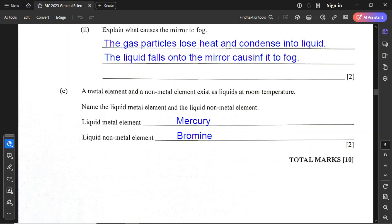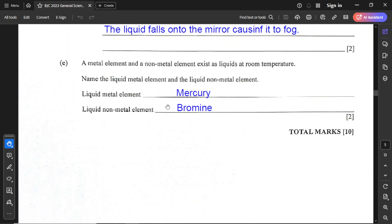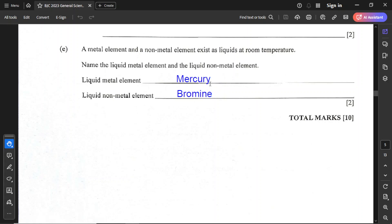For part E, a metal element and a non-metal element exist as liquids at room temperature. Name the liquid metal element and the liquid non-metal element. Liquid metal element is mercury. Mercury exists as liquid at room temperature as a metal, and the non-metal is bromine that exists as a liquid at room temperature.